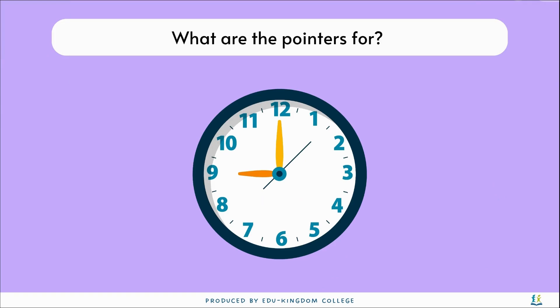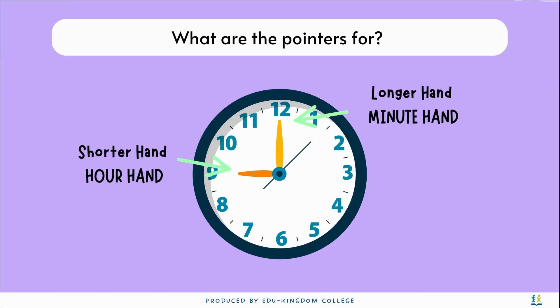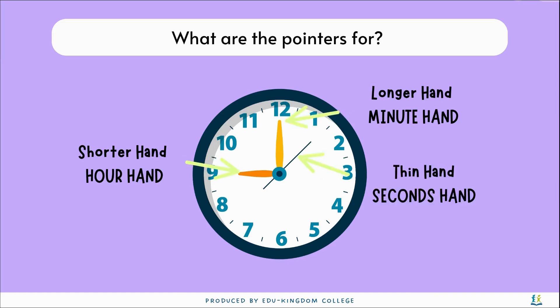On a clock, the longer hand is the minute hand, the shorter hand is the hour hand, and the thinner hand is the seconds hand.